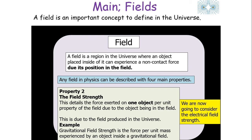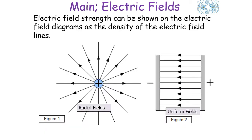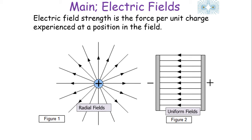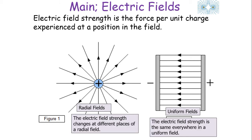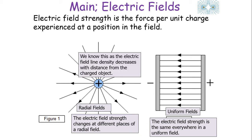This particular field strength does not depend on the object itself in the field; rather, it depends upon the object producing the field. Electrical field strength can be shown on electrical field line diagrams as the density of the electrical field lines. The definition of electrical field strength is the force per unit charge experienced at a position in the field. In a radial field, the electrical field strength changes at different places, whilst in a uniform field, the electrical field strength is the same everywhere.